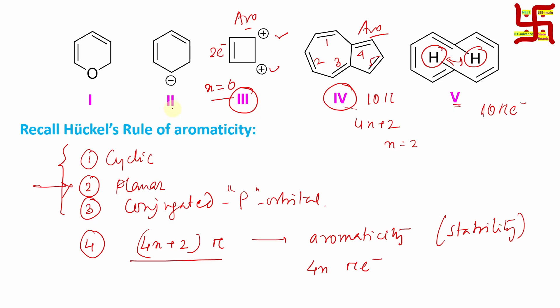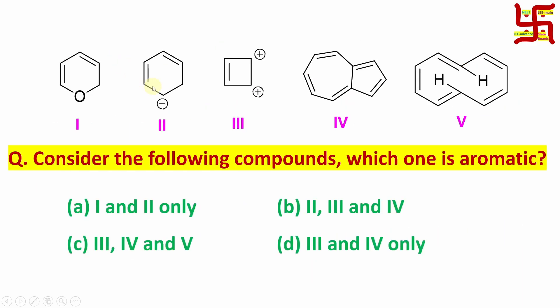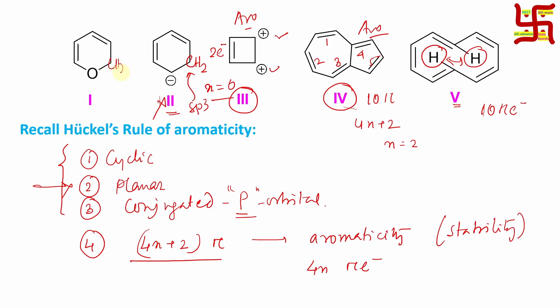If you look at option number 2, it is cyclic but it is not planar. Why? Because here there is a CH2 group which is sp3 hybridized, not only planar and it doesn't have any p orbital. So it is not aromatic, it is non-aromatic. And if you look at same thing is applicable here also. So you can see this is also CH2. So from there I can say this is also not aromatic.